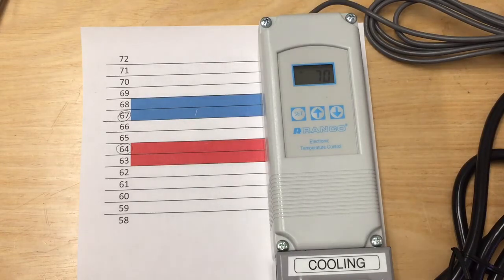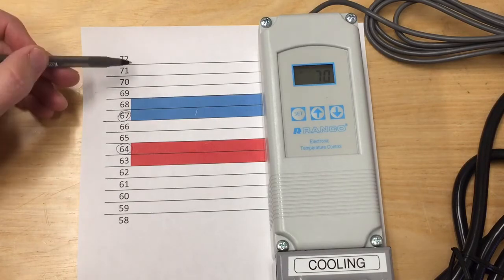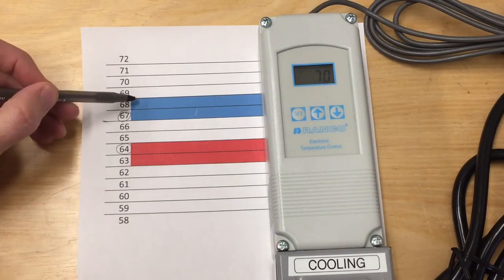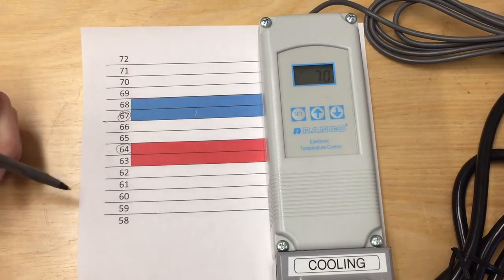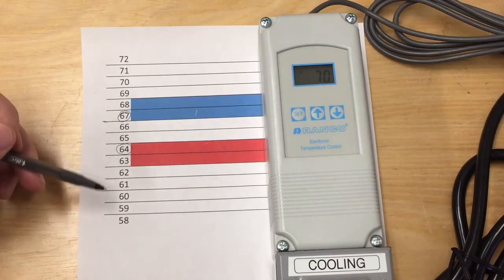Setting up your Ranko two-stage controller is easy once you understand what the differentials are and how they work. On this paper I have two bands, one for cooling, one for heating, and essentially the way the Ranko works is...